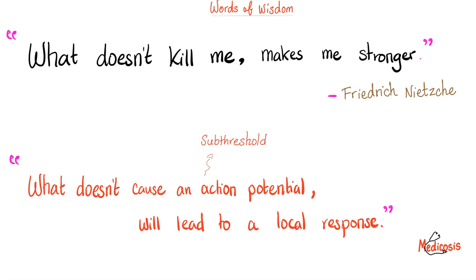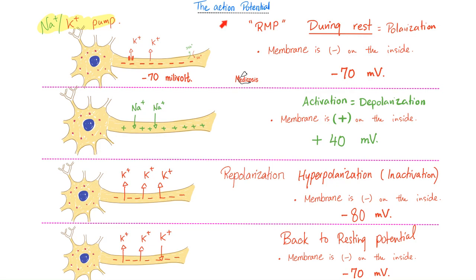Chronaxie means the time needed by a current whose intensity is double the rheobase to excite the nerve. During rest it's called the resting membrane potential. Upon stimulation, if you give enough stimulation — called threshold — you get the action potential. But with a subthreshold or subminimal stimulus, you get a local response. You cannot get an action potential because the nerve follows the all-or-none law. What doesn't cause an action potential because it's subthreshold will at least lead to a local response. During rest, the inside is negative because potassium is leaving — potassium efflux. When positive charge leaves, the inside becomes more negative: negative 70 millivolts.